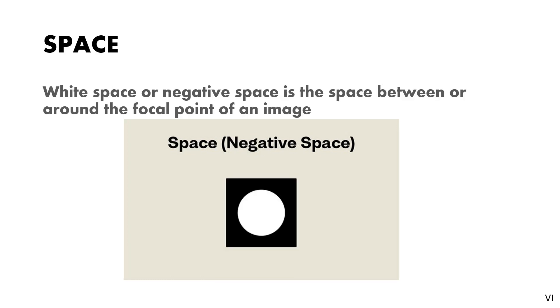Fourth element of design is space. White space or negative space is the space between or around the focal point of an image. In other words, space is the area or volume left after creating a form. Like if you draw any object on a piece of paper, the drawing which you made is a form and the background in the paper which is left undrawn is negative space. And this similarly applies to three dimensions also.